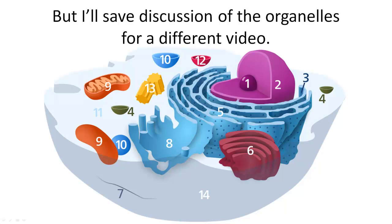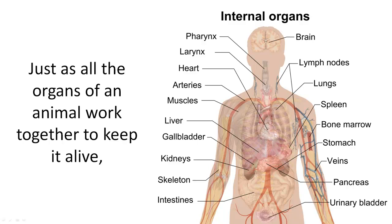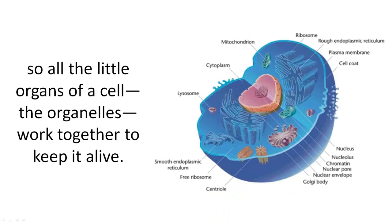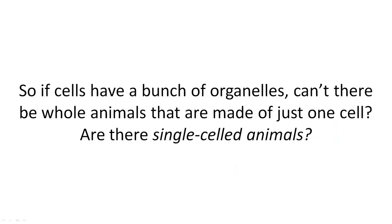I'll save discussion of the organelles for a different video. Just as all the organs of an animal work together to keep it alive, so all the little organs of a cell — the organelles — work together to keep it alive. So, if cells have a bunch of organelles, can't there be whole animals that are made of just one cell?